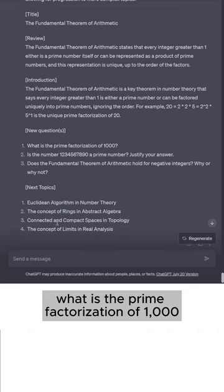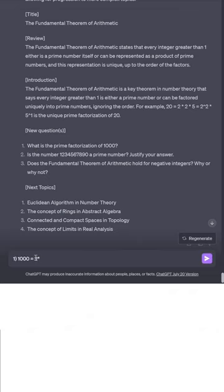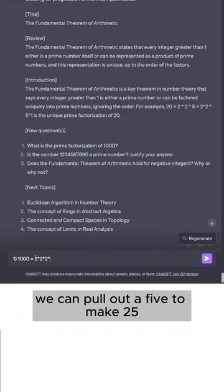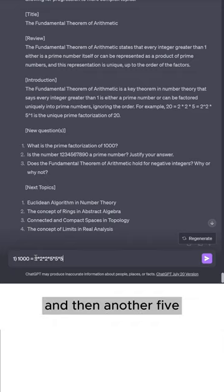What is the prime factorization of a thousand? One thousand equals 2 times 500. We can pull out another 2 to make 250. We can pull out another 2 to make 125. We can pull out a 5 to make 25, and then another 5 to make a 5, and then another 5.